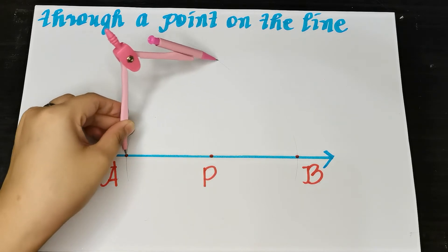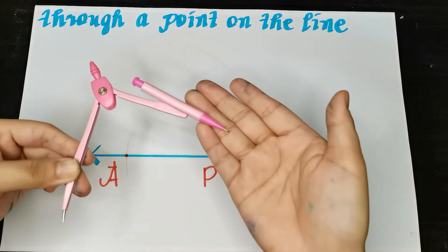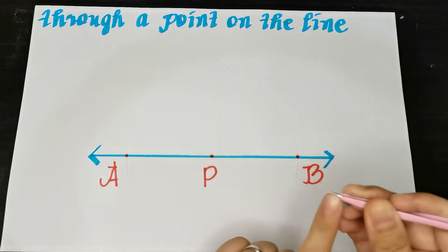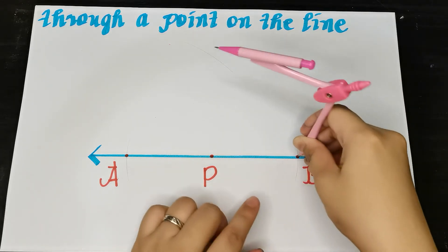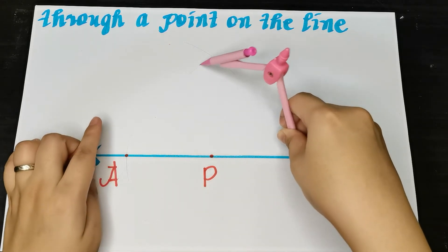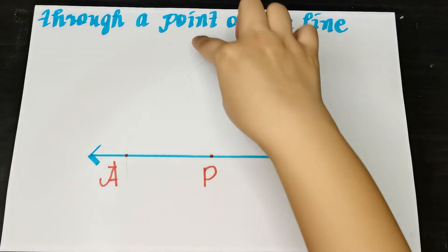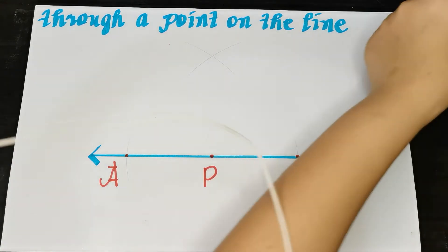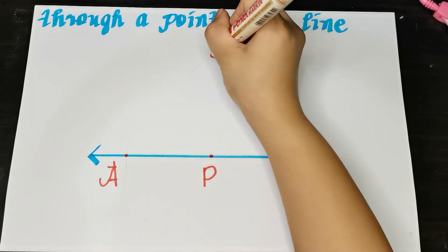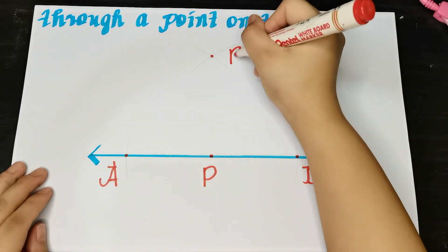Then, without changing the opening of your compass, place the compass point at point B. Do not change it. Draw an arc somewhere there also. So now we have two arcs that intersect with each other. Then draw the intersection and name it point R.